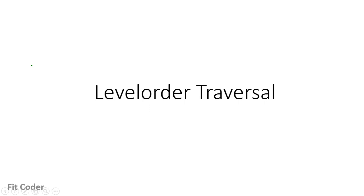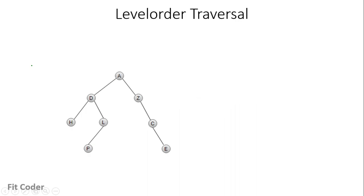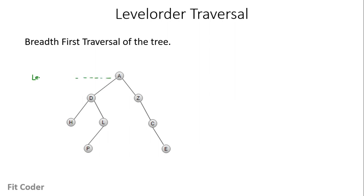In this video I will discuss level order traversal of a binary tree. Level order traversal is a breadth-first traversal of a binary tree. As you know, we can divide the tree into levels — this is level 0, this is level 1, this is level 2, and this is level 3.